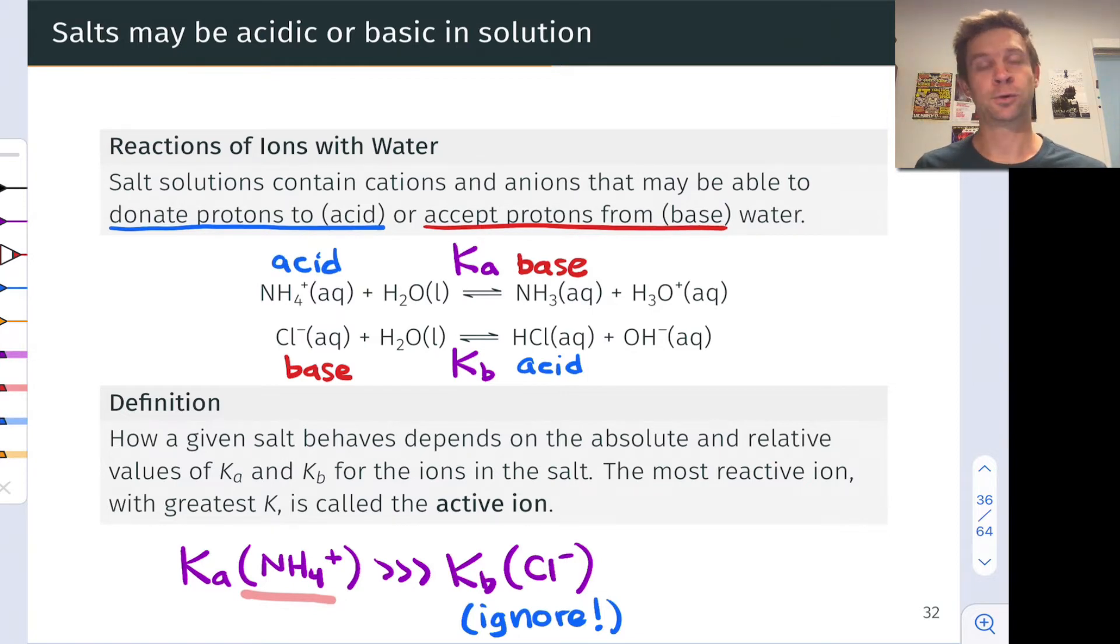This is what's driving the acidic or basic behavior of this salt. In fact, we would conclude that this is an acidic salt because the major, dominant reaction with the greater K value involves the cation acting as an acid. This is the active or reactive ion when ammonium chloride is dissolved in water.